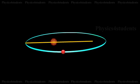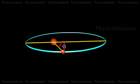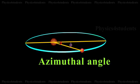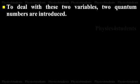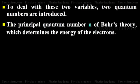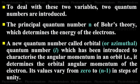When elliptical orbits are permitted, one has to deal with two variable quantities: the varying distance of the electron from the nucleus, and the varying angular position of the electron with respect to the nucleus, that is the azimuthal angle phi. To deal with these two variables, two quantum numbers are introduced — the principal quantum number n of Bohr's theory, which determines the energy of the electrons, and a new quantum number called the orbital or azimuthal quantum number, which characterizes the angular momentum in an orbit.